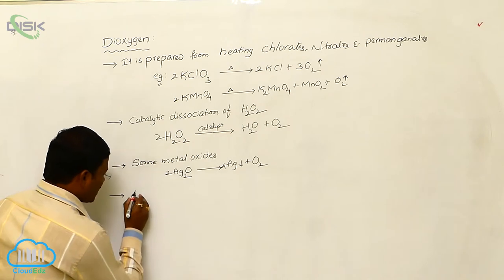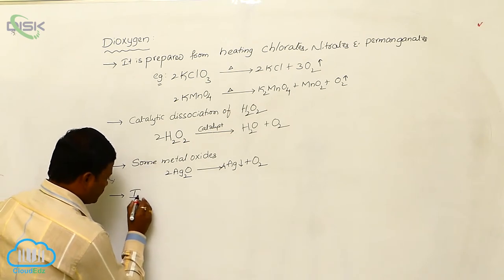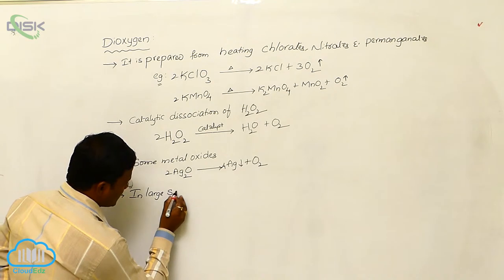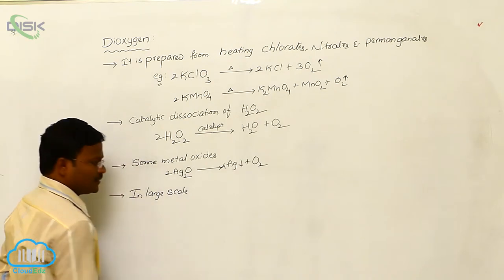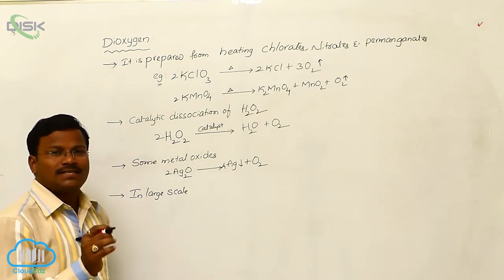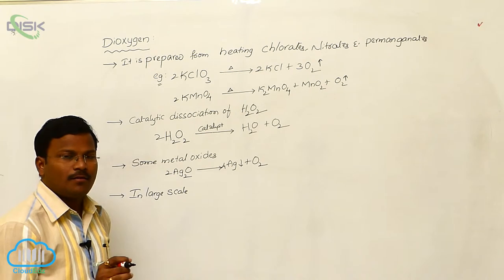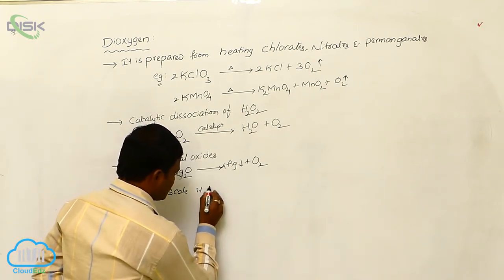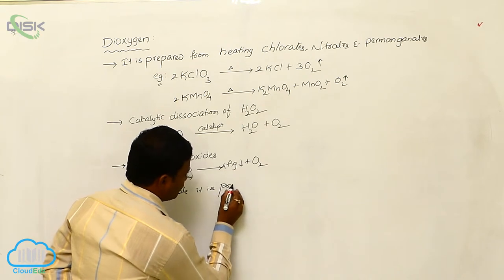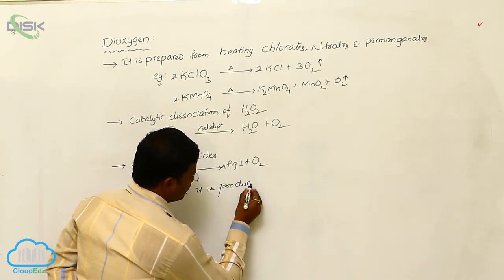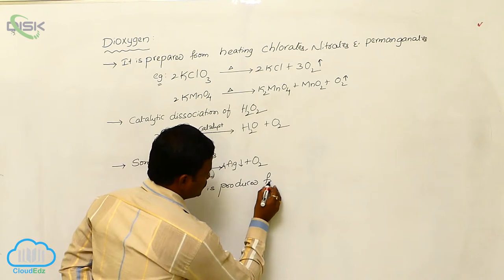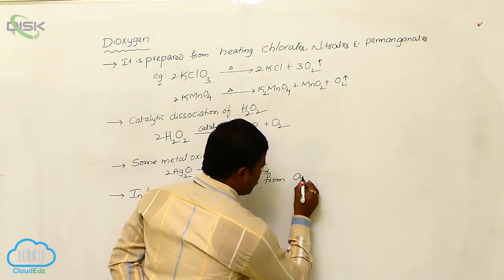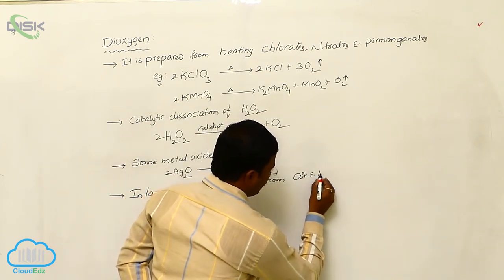Next, in large scale, Dioxygen is produced from air and water.